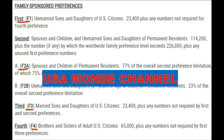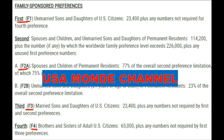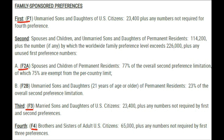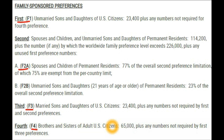Now we're going to talk about the April 2023 Visa Bulletin. This section covers family-sponsored preferences. We're going to cover F1, F2A, F2B, F3, and F4 categories — both the date for filing chart and the final action date chart. F1 is unmarried sons and daughters of U.S. citizens. F2A is spouses and children of permanent residents. F2B is unmarried sons and daughters 21 years of age or older of permanent residents. F3 is married sons and daughters of U.S. citizens. F4 is brothers and sisters of adult U.S. citizens.